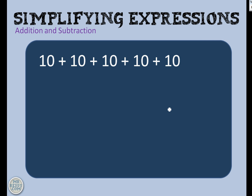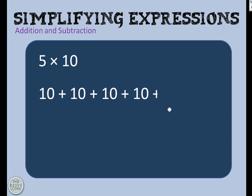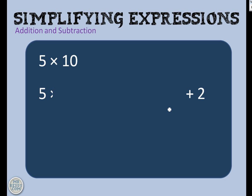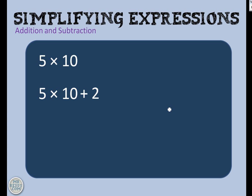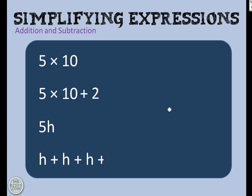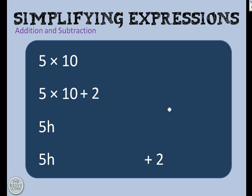What's going on here then? 10 plus 10 plus 10 plus 10 plus 10 — that's 5 times 10. What about 10 plus 10 plus 10 plus 10 plus 10 plus 10 plus 2? Well, we could simplify all the 10s added together to 5 times 10, but we still have to add the 2. So the same with h's: all of those h's can be shortened to 5h, and all of those h's plus the 2 get shortened to 5h plus 2.